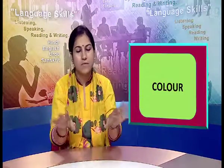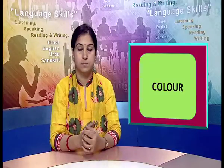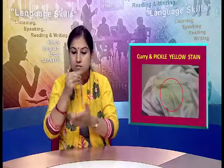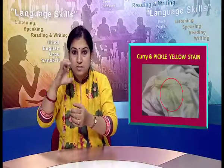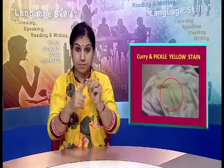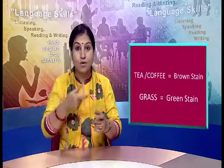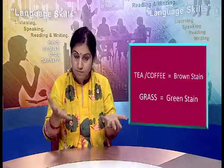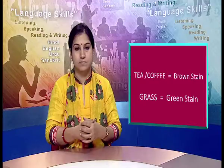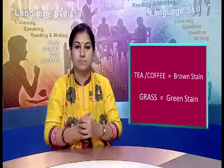Every stain has a specific colour. For example, colour of curry and pickle is yellow. Coffee and tea stain is brown. And a grass stain is green.